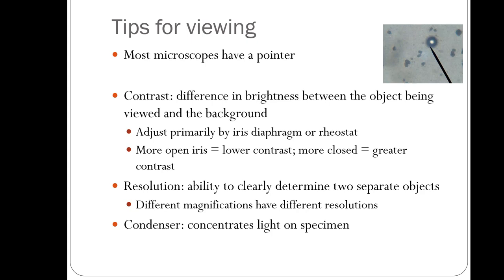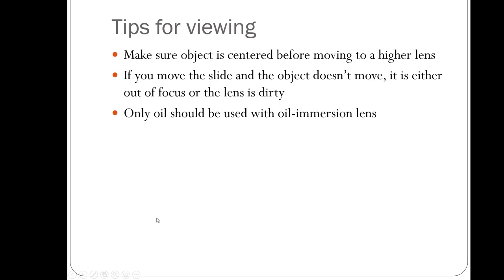Resolution refers to the ability to clearly distinguish two separate objects from one another. With good resolution you can clearly see two objects as distinct; with poor resolution they blur together. The condenser concentrates the light on the specimen, and you can control brightness with the rheostat — the condenser is an important part of the microscope because it focuses the light on the specimen.